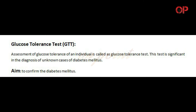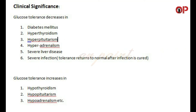Clinical significance: glucose tolerance decreases in — (1) diabetes mellitus, (2) hyperthyroidism, (3) hyperpituitarism, (4) hyperadrenalism, (5) severe liver disease, (6) severe infection. Tolerance returns to normal after infection is cured. Glucose tolerance increases in — (1) hypothyroidism, (2) hypopituitarism, (3) hypoadrenalism.